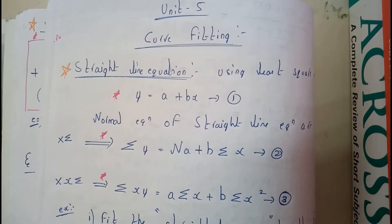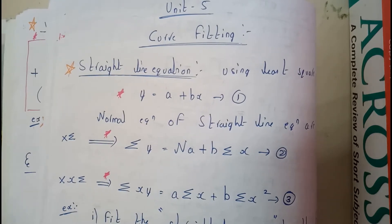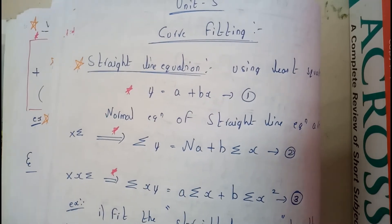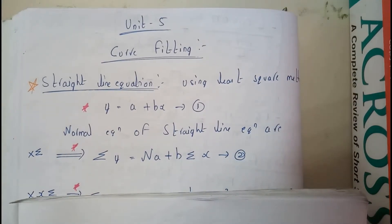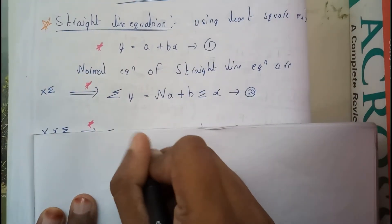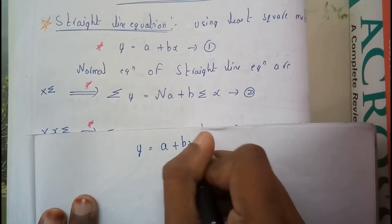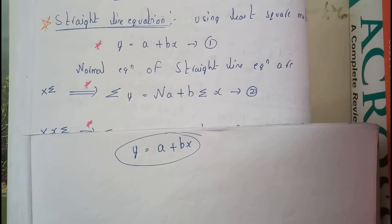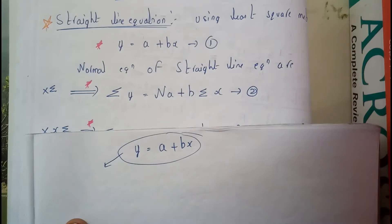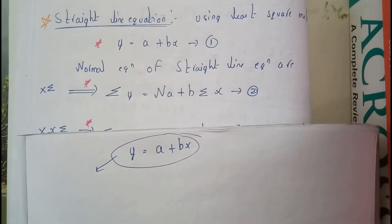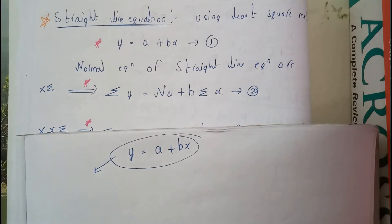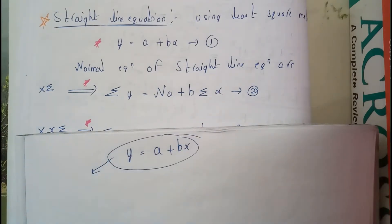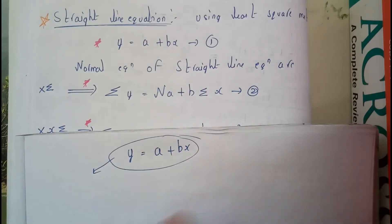I will show you how you can derive the other equations, so don't worry about that. You need to memorize one equation in your brain — it is nothing but y equals a plus bx. It's really simple: y = a + bx. This is the equation of a straight line, and you need to find this as the final result.